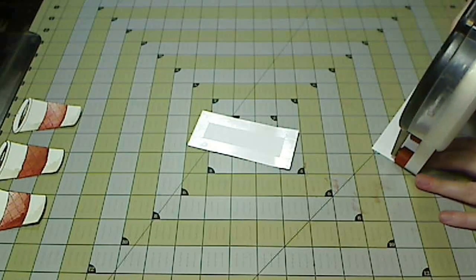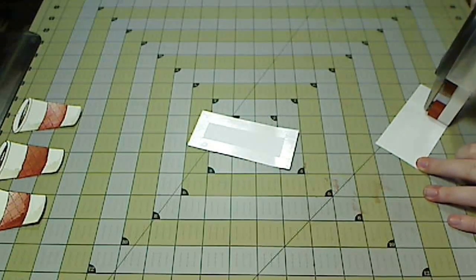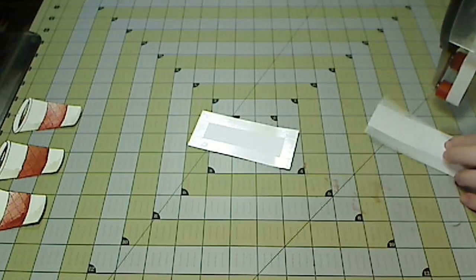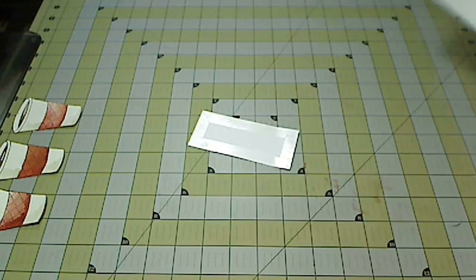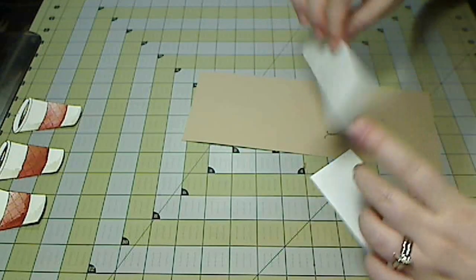Now I'm taking a couple of pieces of pattern paper from the Cosmo Cricket Material Girl mini deck and I'm putting adhesive on the back. And I'm going to stick these to the bottom of my card bases so that there's a little pop of color.